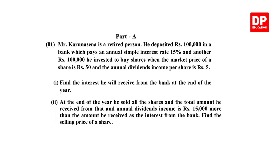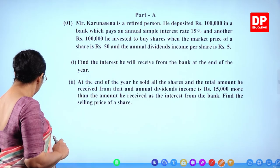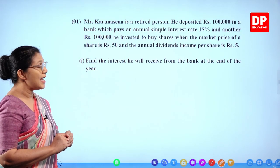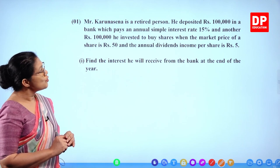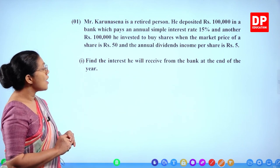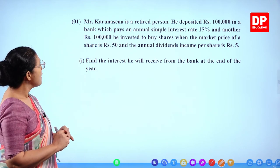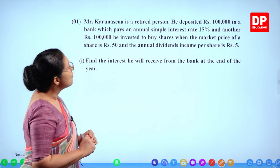Question number 1 is about a percentage question involving simple interest, and you have several parts. Mr. Karnasena is a retired person. He deposited 100,000 rupees in a bank which pays an annual simple interest rate of 15%, and another 100,000 rupees he invested to buy shares when the market price of a share is 50 rupees and the annual dividend income per share is 5 rupees. The first part asks: find the interest he will receive from the bank at the end of the first year.